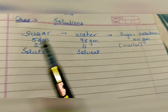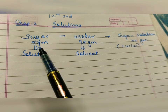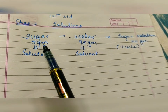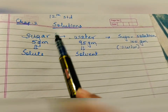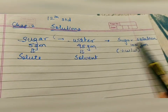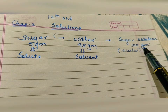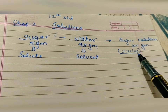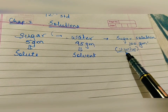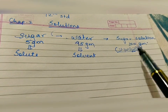For example: you have taken 5 grams of sugar and 95 grams of water. You are adding 5 grams of sugar to 95 grams of water, preparing a sugar solution of 100 grams. This is done according to the percentage weight-by-weight method — grams of solute dissolved in grams of solvent to make grams of solution.